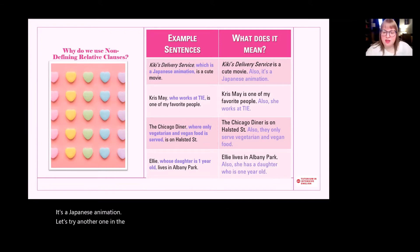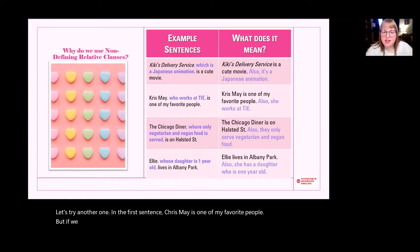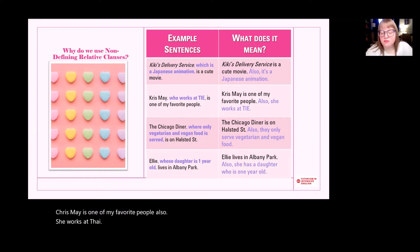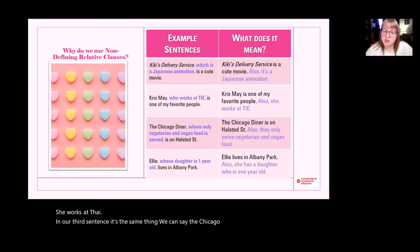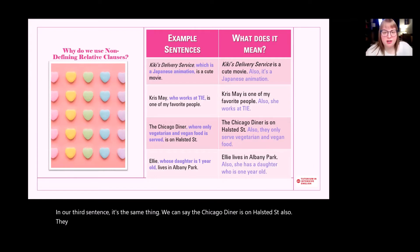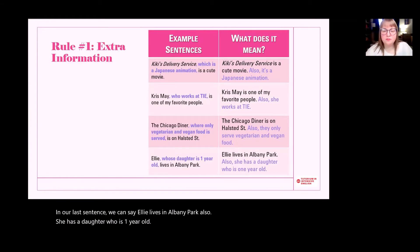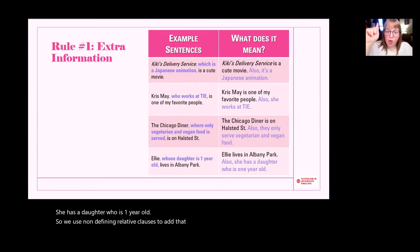In the first sentence, Chris May is one of my favorite people. But if we take that non-defining relative clause out and create a second sentence, we can say: Chris May is one of my favorite people. Also, she works at Thai. In our third sentence: The Chicago Diner is on Halstead Street. Also, they only serve vegetarian and vegan food. In our last sentence: Ellie lives in Albany Park. Also, she has a daughter who is one year old. We use non-defining relative clauses to add that second 'also' sentence.